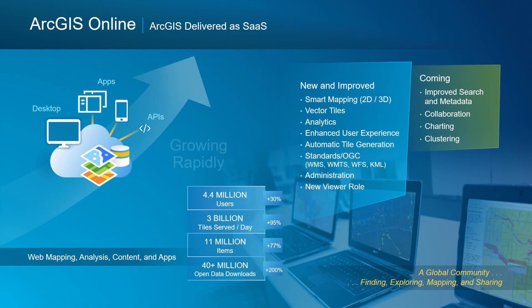The fourth component for this morning is ArcGIS Online — ArcGIS as SaaS. This environment is growing very rapidly. We now have over 4 million subscribers and make billions of tiles a day, which equates to hundreds of millions of maps a day. That's scale.